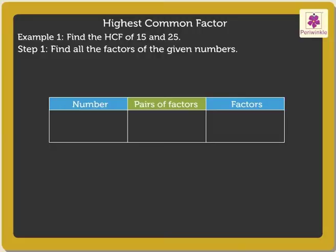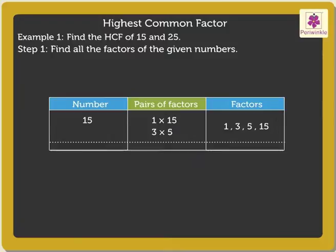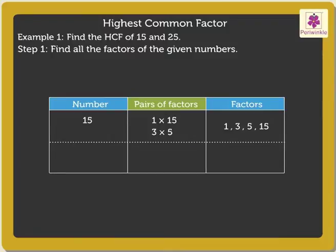Here the pairs of factors of number 15 are: 1 × 15 = 15, and 3 × 5 = 15. Thus the factors of 15 are 1, 3, 5, and 15.